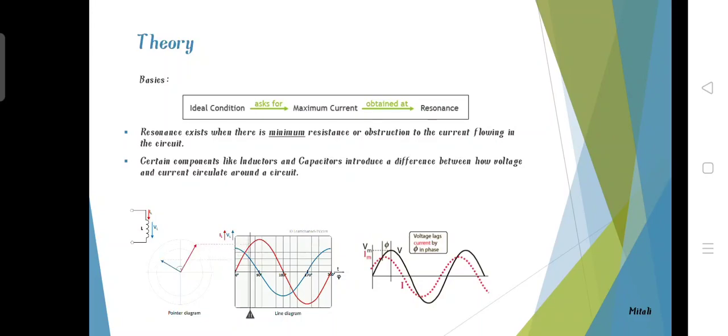The theory of this experiment includes the basics of resonance. Resonance is a condition in which the capacitance and the inductive reactance are equal. For this condition, the circuit offers minimum resistance and the minimum resistance leads to the maximum current. The resonance exists when there is minimum resistance or obstruction to the current flowing in the circuit.